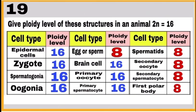Question 19: Calculate the ploidy level of different structures in an animal where 2n equals 16.